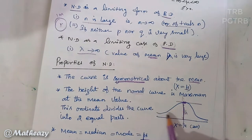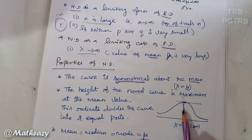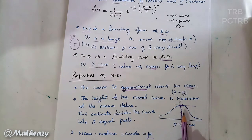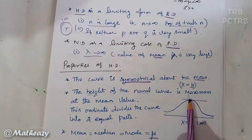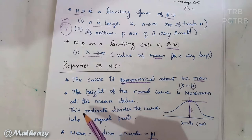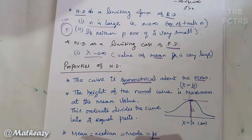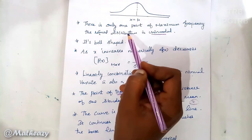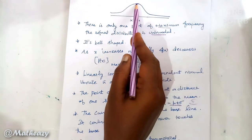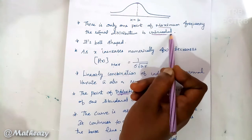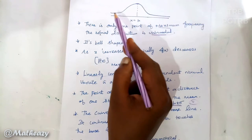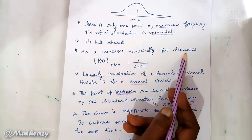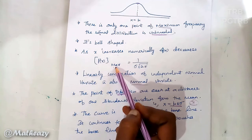Properties of normal distribution: First, the curve is symmetrical about x equal to mu. Second, the height of the normal curve is maximum at the mean value — that is, the maximum height occurs at x equal to mu. Third, the distribution is unimodal. As x increases away from the mean, the function f(x) decreases.